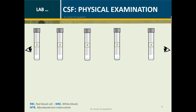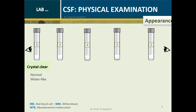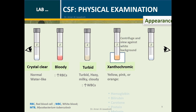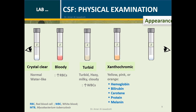Physical examination of CSF — Appearance: Normally, CSF is crystal clear. It may appear bloody due to increased RBCs, turbid due to increased white BCs, or xanthochromic (yellow, pink, or orange) due to hemoglobin, bilirubin, carotene, protein, or melanin. Pellicle formation may be seen in tubercular meningitis.